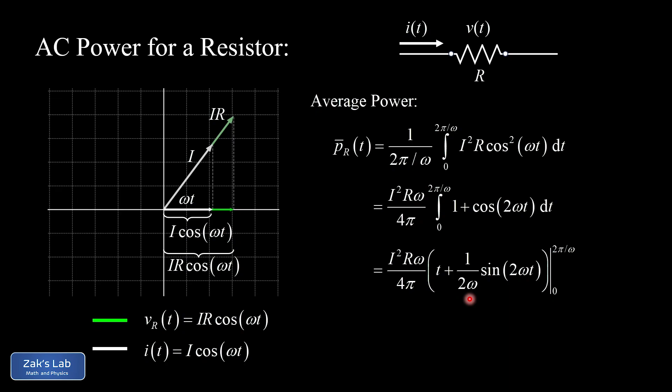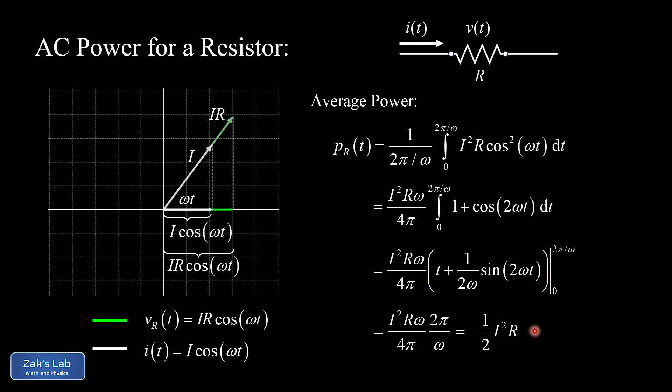The antiderivative of 1 is t, and the antiderivative of cos(2ωt) is (1/2ω)·sin(2ωt), taking care of the chain rule. Evaluating at the lower limit t=0, both terms vanish. At the upper limit t=2π/ω, the sine term becomes sin(4π)=0 and only the first term t=2π/ω survives. So out of four possible terms, only one survives.